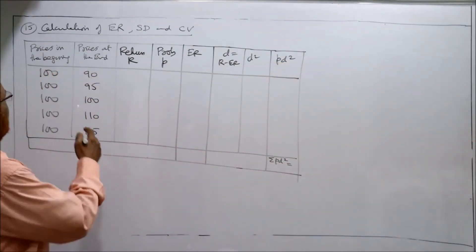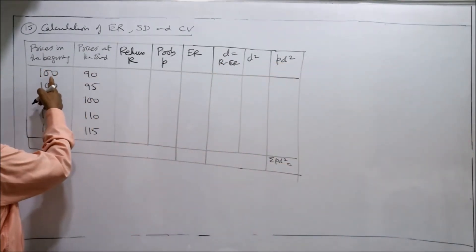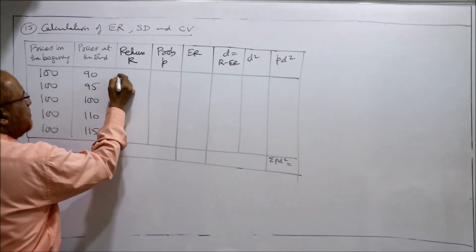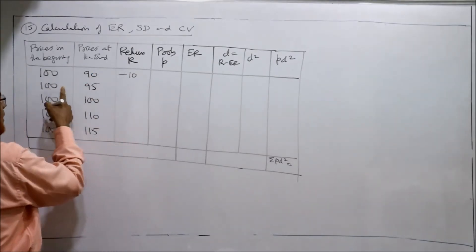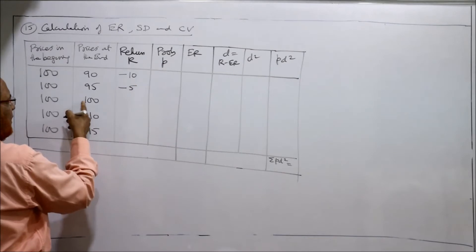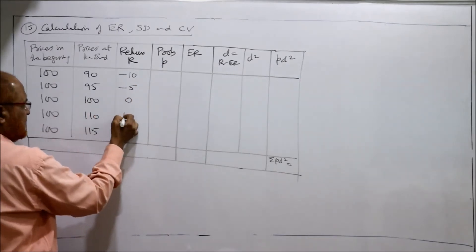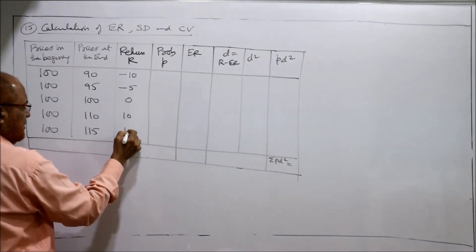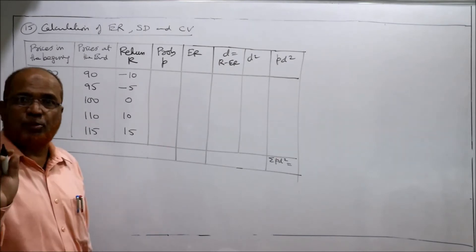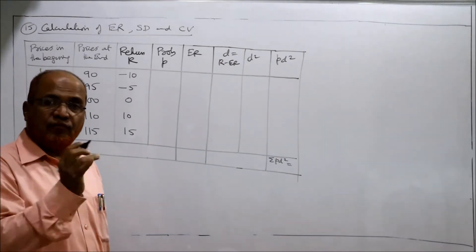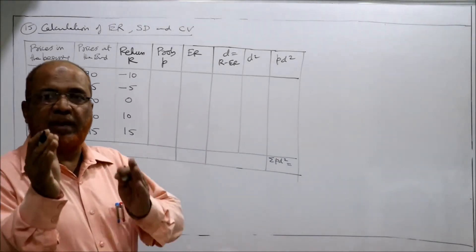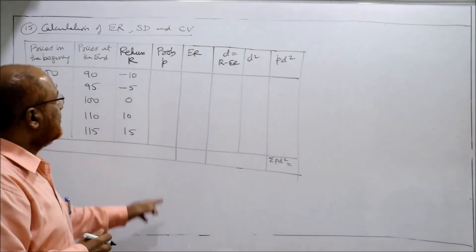So returns: 100 rupees beginning, end of the year 90, so there is minus 10%. Then 95, minus 5, 100, 100, 0, this is 10, this is 50. These are the returns which are not given in the problem. We have calculated the return by comparing the beginning price with the end price.